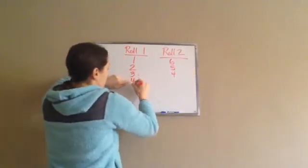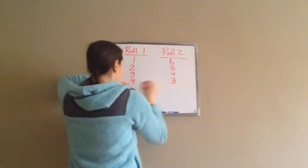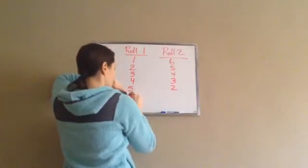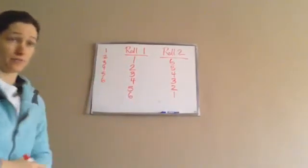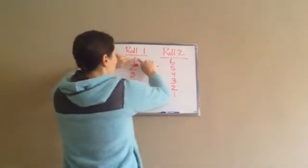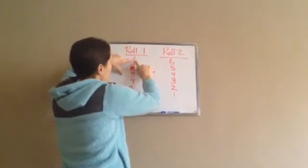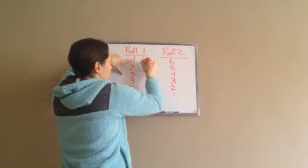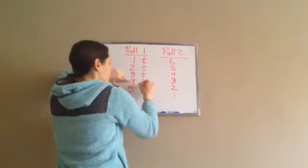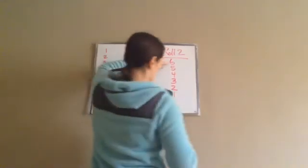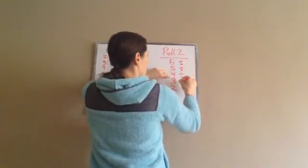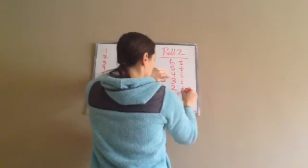If roll one is a five, roll two must be two. If roll one is a six, roll two must be one. Each individual roll has a one-sixth chance, and since you're doing two rolls, you multiply: one-sixth times one-sixth equals one thirty-sixth for each combination. This is important — don't skip this step.